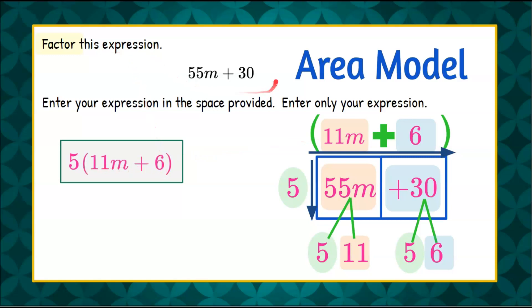So this expression 55m plus 30 factored is 5 multiplied by the quantity 11m plus 6.